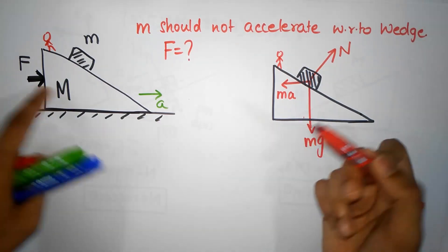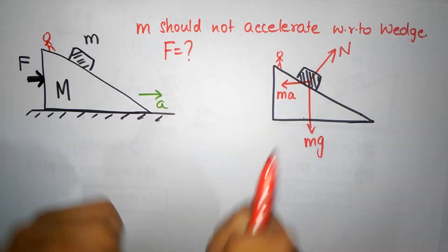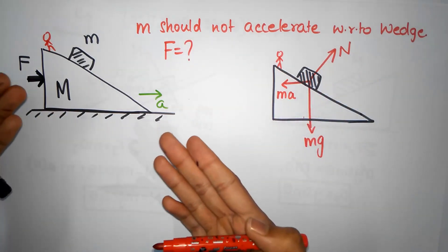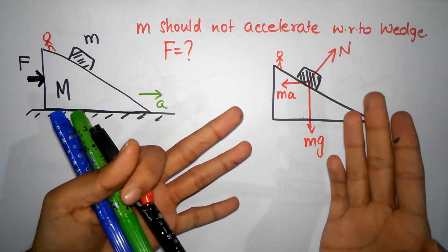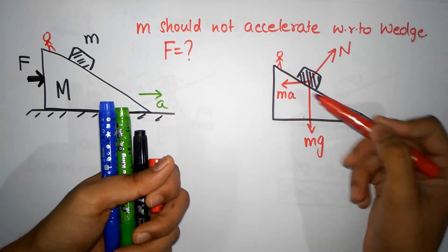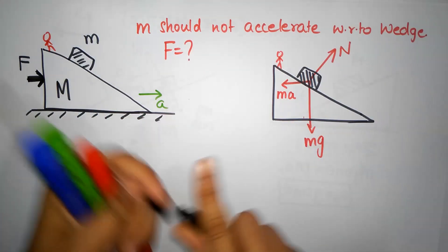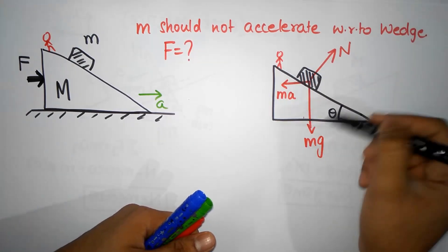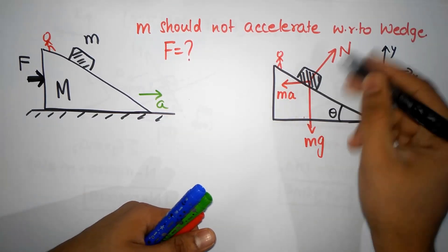We need to figure out what the acceleration should be so the block doesn't slide down. From the non-inertial reference frame it's easy - just add an extra force and cancel all the forces. Here is theta, the angle. I'll choose this as my X and Y because mg and ma are already along these axes, so I don't have to resolve them.